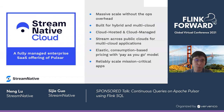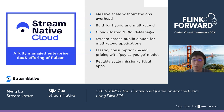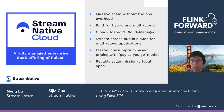At Stream Native, we offer Stream Native Cloud, which is a fully managed enterprise SaaS offering of Pulsar. It can massively scale without ops overhead and was built for hybrid and multi-cloud environments. There are two types of cloud offering. The first is cloud-hosted, where people can provision cluster resources in our cloud portal. The other is cloud-managed, where we deploy the whole stack of the Pulsar service into your cloud environment, allowing streaming across different public clouds for multi-cloud applications.